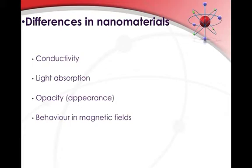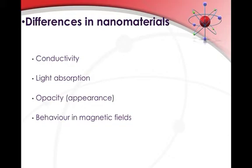Conductivity is a key one. A conductor is basically something that is able to transmit heat or energy, and the level of conductivity — which is the extent to which a material is able to transmit heat or electricity — alters on the nanoscale. Light absorption, which is also a key concept throughout this module, is also something that can change on this small scale. Opacity, related to its appearance, can also be different, and also its behaviour in magnetic fields. All of these ideas will be explored in latter parts of the module — just a sneak peek of what we'll be considering when looking at nanotechnology and the nanoscale.